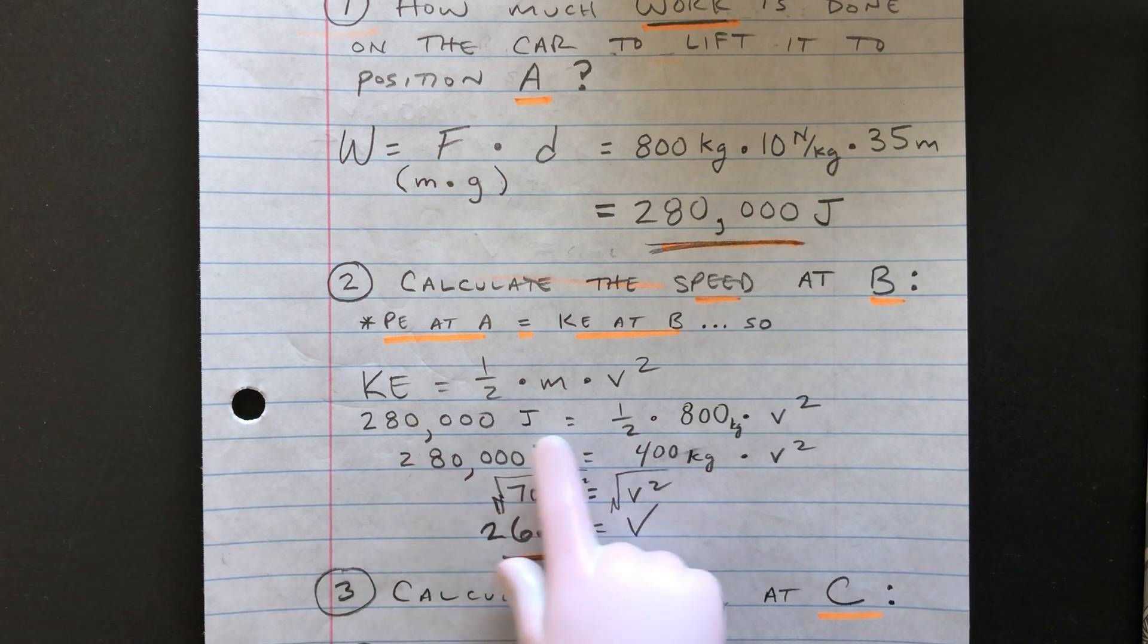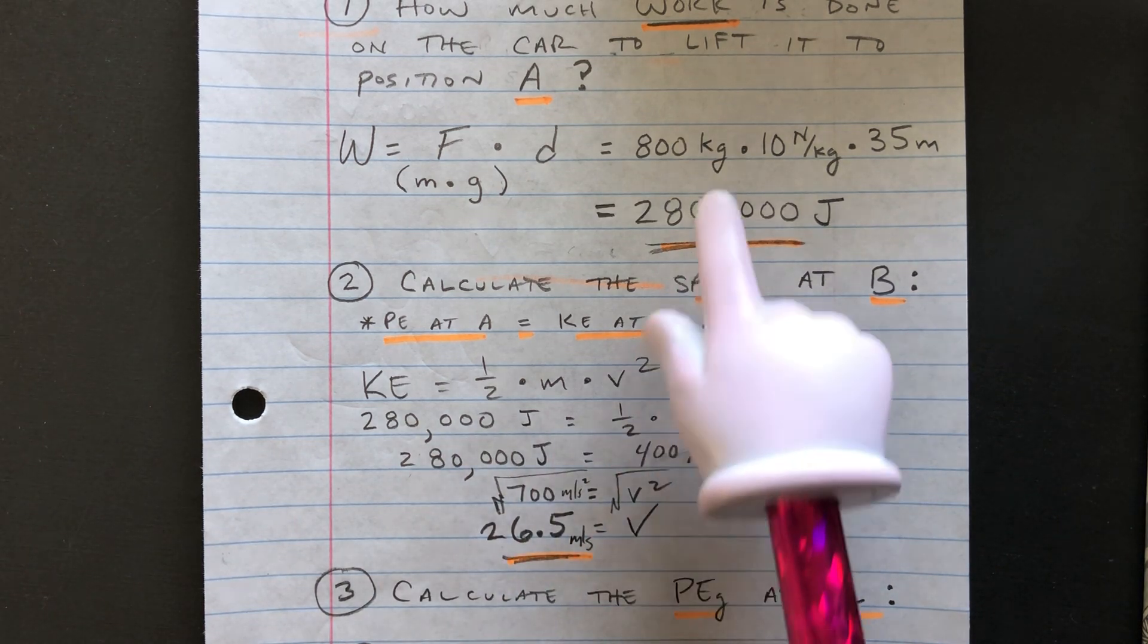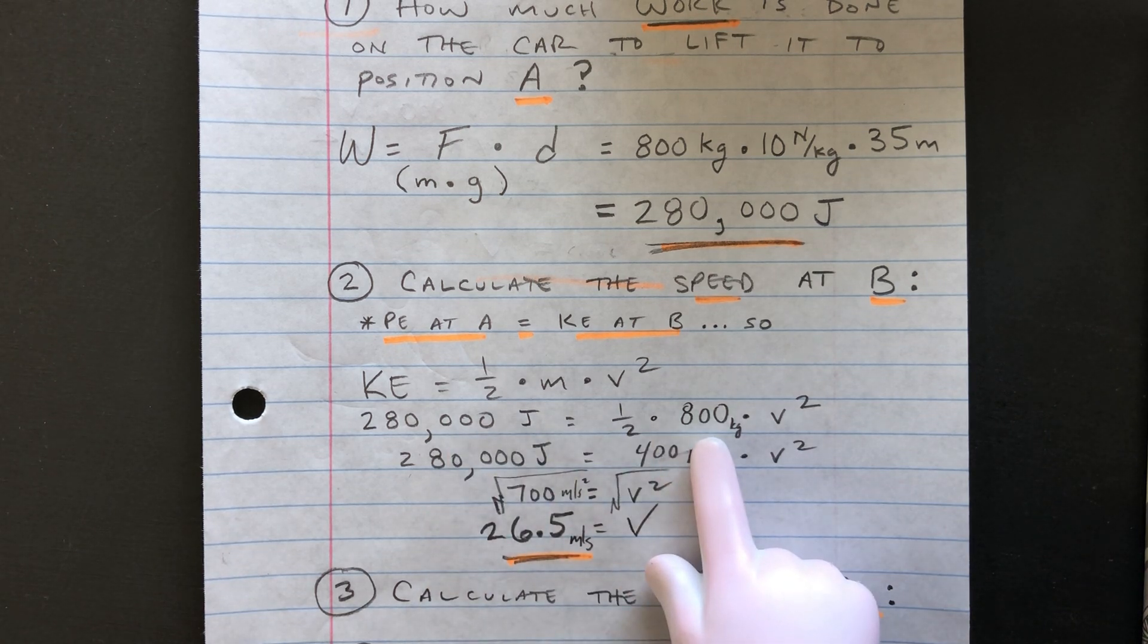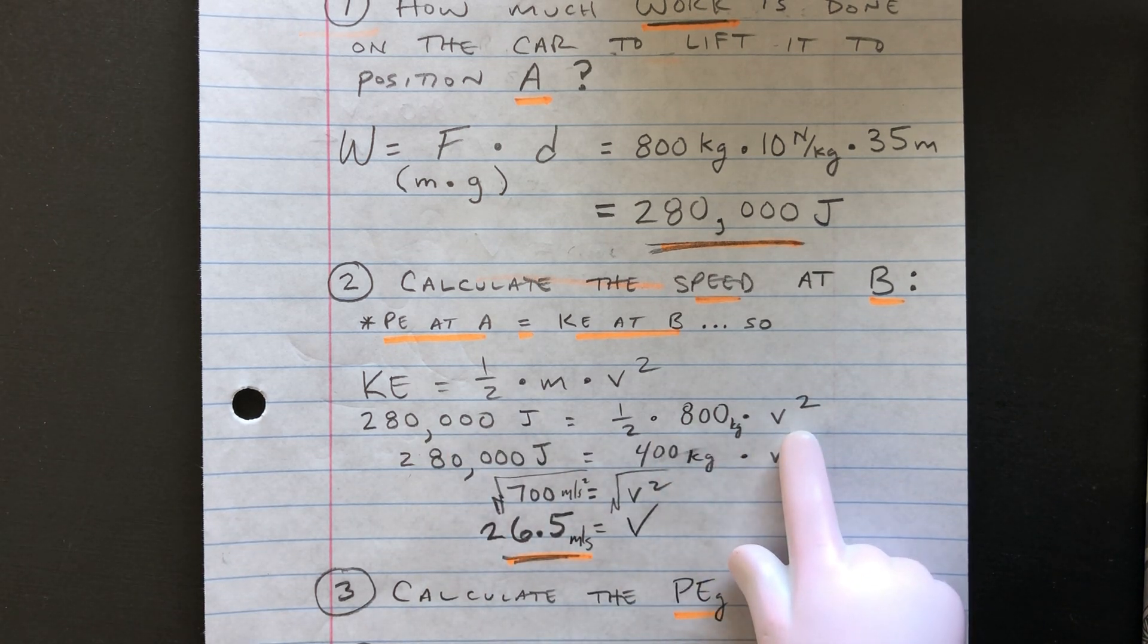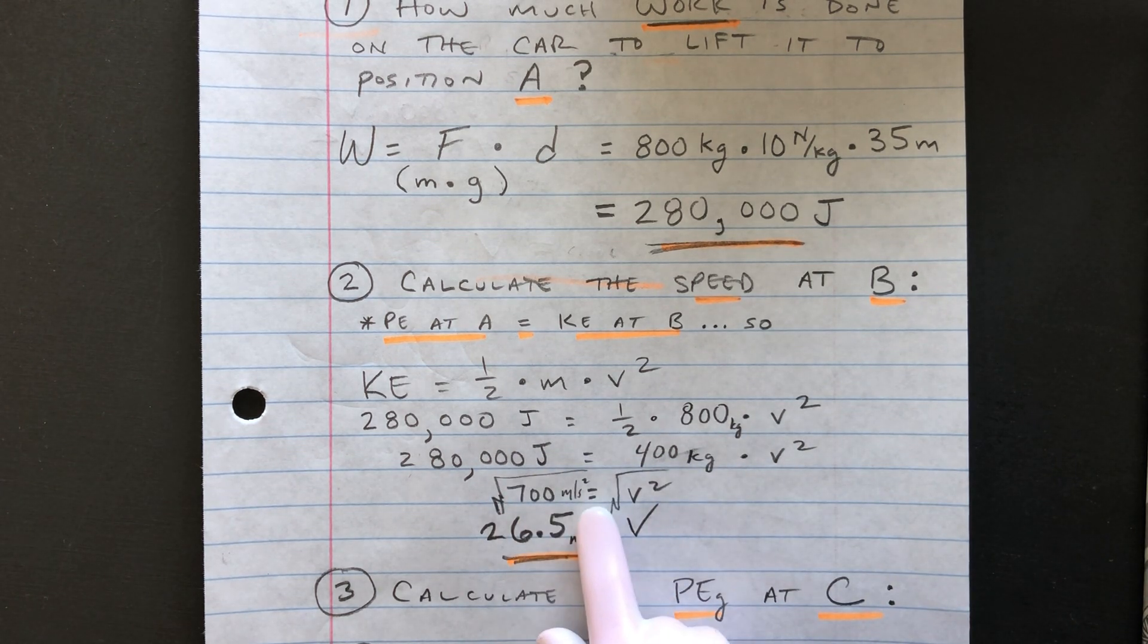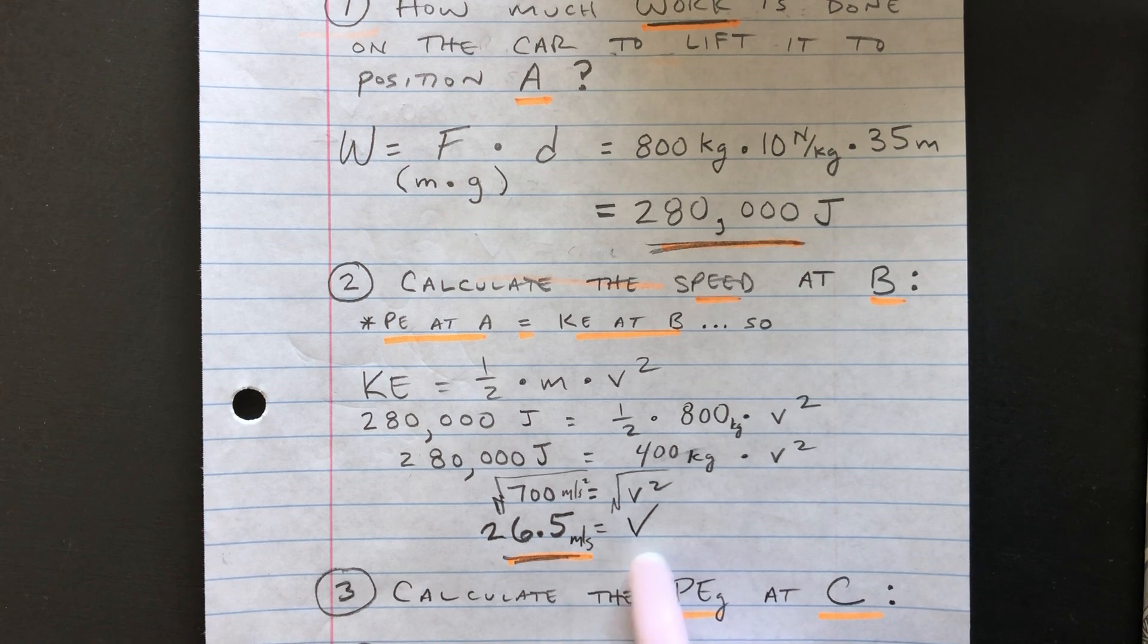28,000 joules would equal one half because the 28,000 joules came from up here. 1 half times 800 times V squared. Take half of 800. Divide both sides by 400. You'll have 700 equals V squared. Take the square root of both sides and the speed is about 26.5 meters per second at point B.